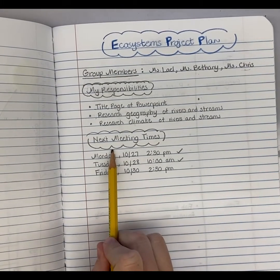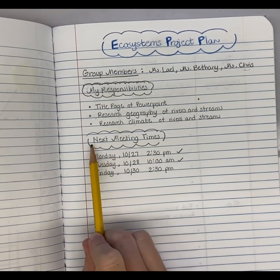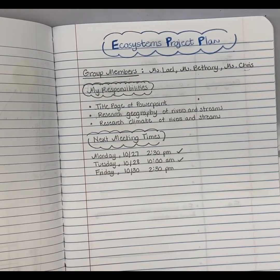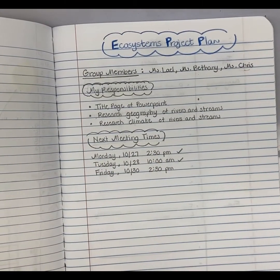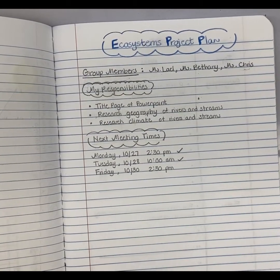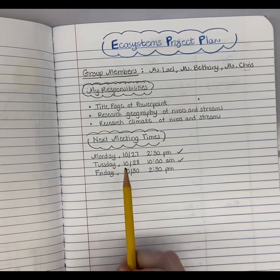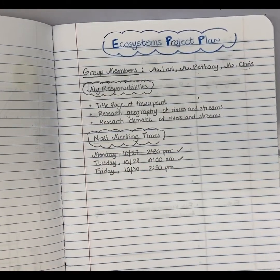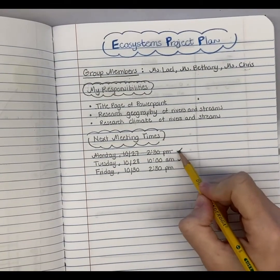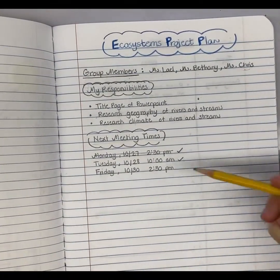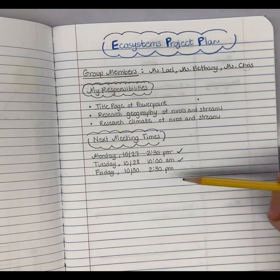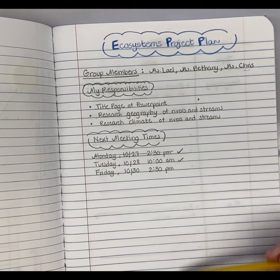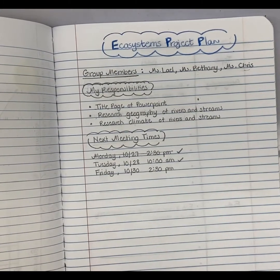The final thing I'd like you to have on this page is a section where you are writing down when you're meeting with your group. I know that we have it recorded on the computer, but sometimes it is really nice to just be able to look at a piece of paper and see when something is happening, and to be able to cross it off when you've already met with them — or like I did right here, put a check. Leave a lot of space under that so you can always keep writing which times and which days you're going to meet with your group.